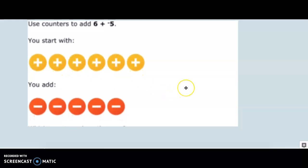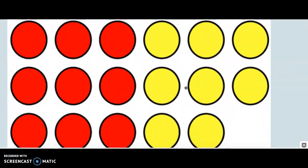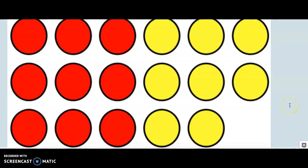Next, use the counters to add 6 plus negative 5. What problem do these counters represent? What is the answer to the problem that these counters represent?